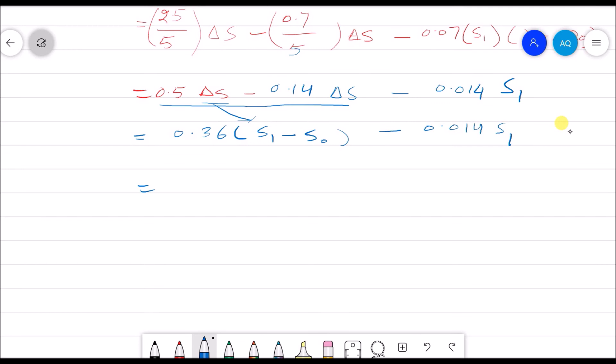Open these brackets. We will have 0.36S₁ minus 0.36S₀ minus 0.014S₁. So now we can subtract these two.